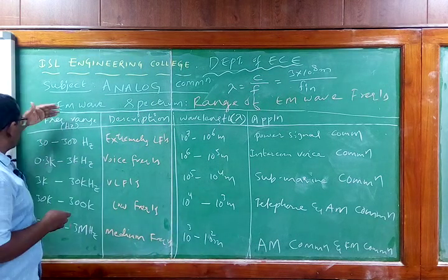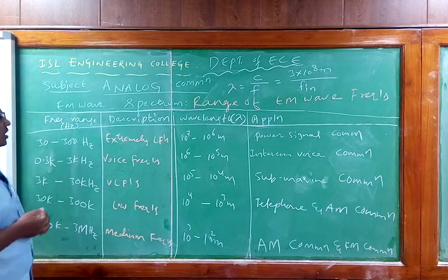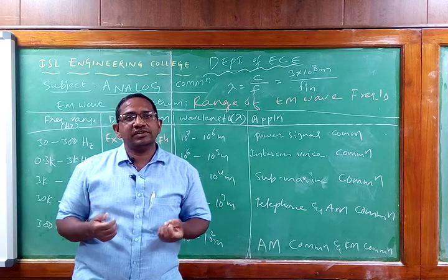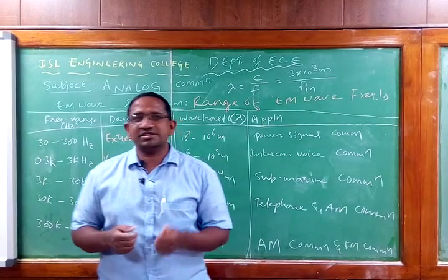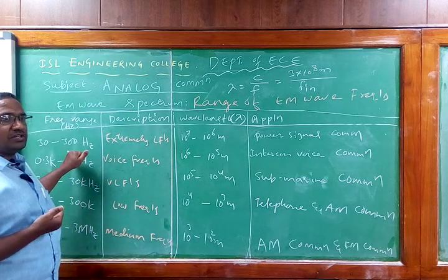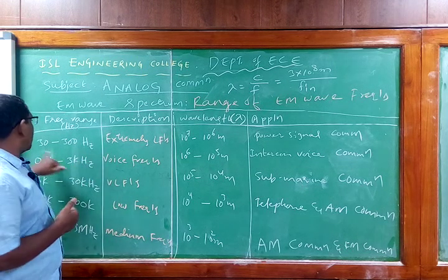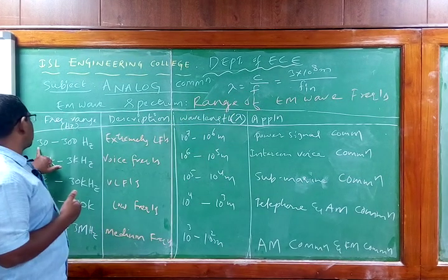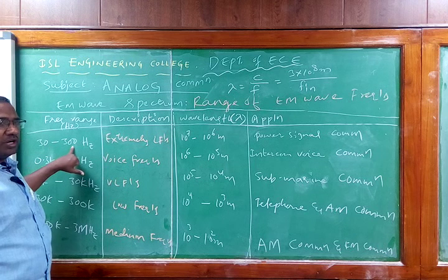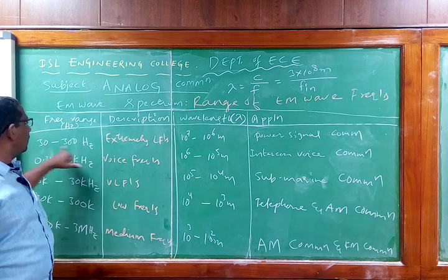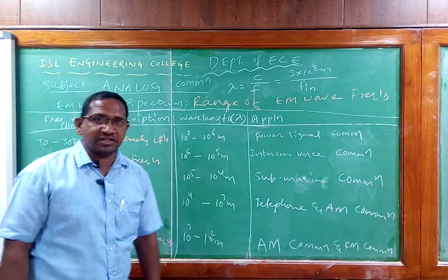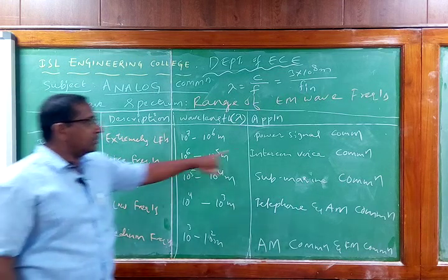Our AC mains frequency is 50 Hz, which falls in the 30–300 Hz range. This range is known as Extremely Low Frequencies (ELF), used for power signal communications such as handshaking and power signals — not actual information signals. The wavelength for this range: λ = 3×10⁸ / 30 = 10⁷ meters at the lower end, and 10⁶ meters at 300 Hz. Wavelength is the distance traveled by a wave in unit time.